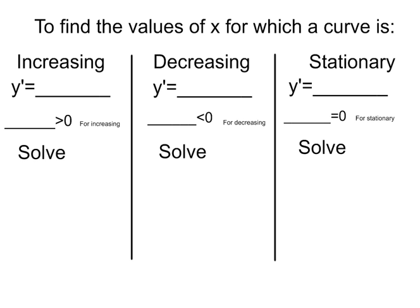To find the values for which a curve is increasing, we find the first derivative — y dash — and then we make that greater than 0 for increasing, and then we solve that inequality to find, for example, x is greater than 2, something like that.